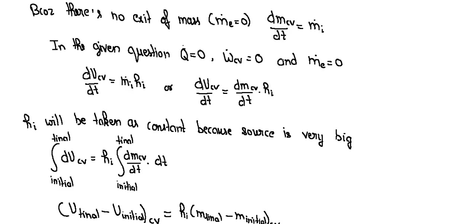Now in first equation, we will put value. We will get dUcv/dt equals m dot i hi. The value of mi dot we will replace from this equation, dmcv/dt into hi.